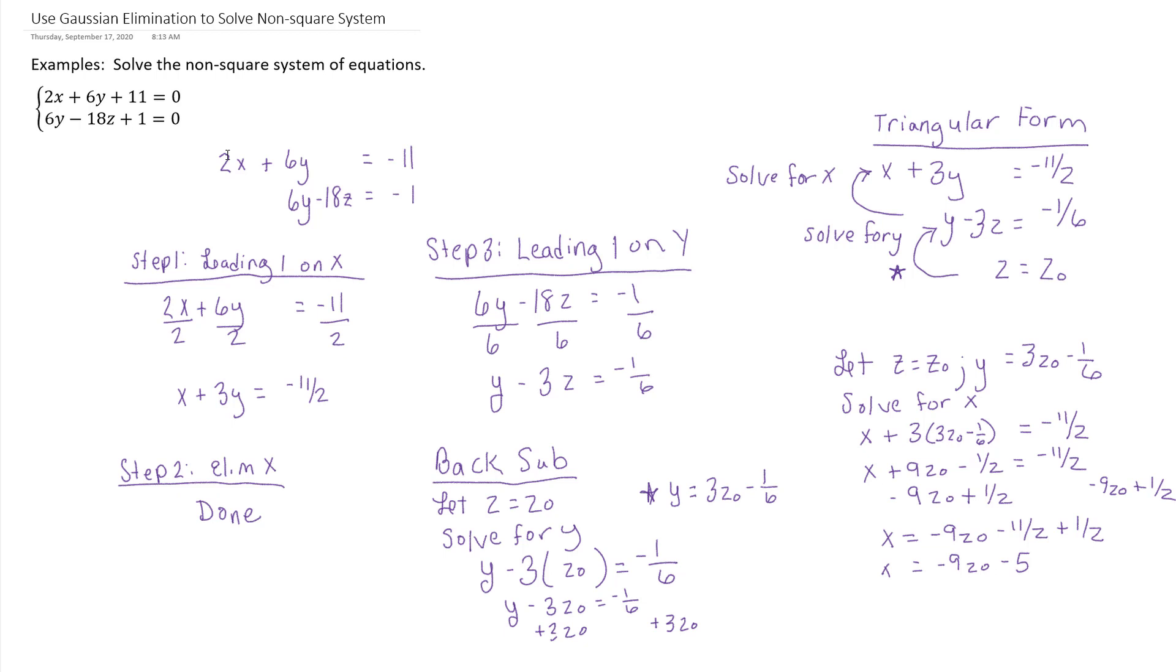And so your solution at the end of the day is an ordered triple that depends on z naught. The x value is negative 9 times z naught minus 5. The y value is 3z naught minus 1 sixth. And the z value is z naught. This represents an infinite number of ordered triples that depend on your z naught value.